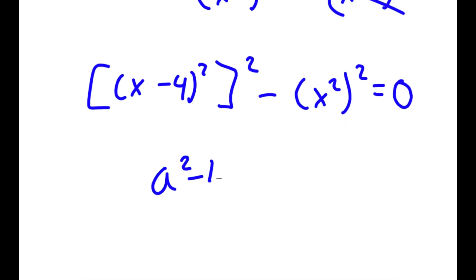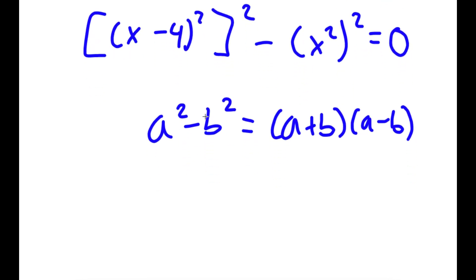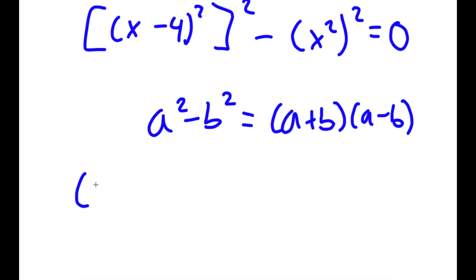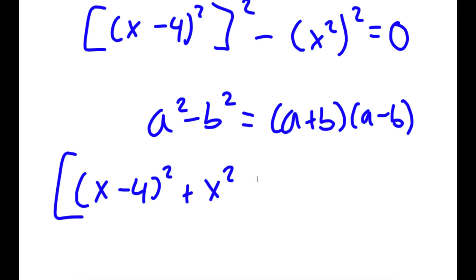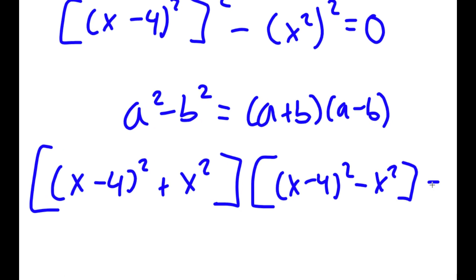Now, if I have something in the form a squared minus b squared, this is equal to a plus b times a minus b. So in this case, this is equal to x minus 4 squared plus x squared, times x minus 4 squared minus x squared, is equal to 0.